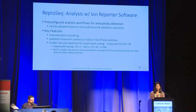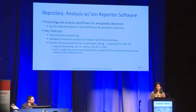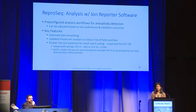Key features our lab team really enjoys include plot smoothing and updated mosaicism analysis to reduce the risk of false positives. The smaller tile size baselines for smaller event calling is extremely important for PGTSR. At Sequence 46, our PGTA baselines are 2 megabases versus our PGTSR at half a megabase. However, the smaller tile size is not recommended for the standard PGTA workflow because, as you'll see in some coming slides, results become too noisy and will lead to false positives.